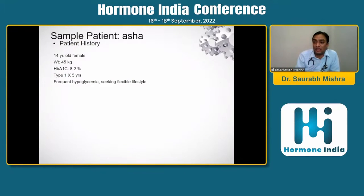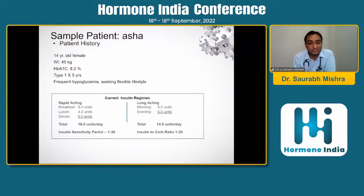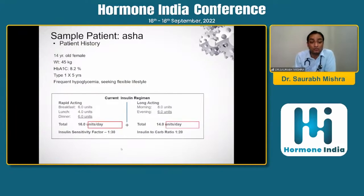To demonstrate dose calculation and initiation practically: Asha is a 14-year-old female with Type 1 diabetes, HbA1c 8.2%, with treatment hypoglycemia. She is currently using rapid-acting insulin — 6, 4, 6 units at breakfast, lunch, and dinner respectively — and morning long-acting insulin. Total insulin consumption is 30 units. Her insulin sensitivity factor is 1:30 and her carb ratio is 1:20.